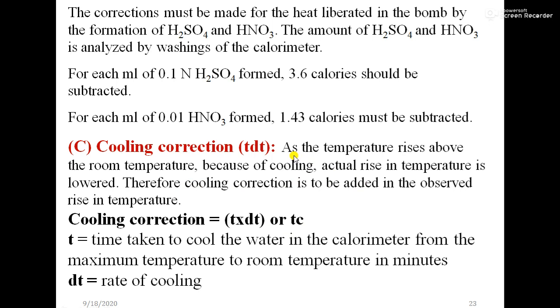As the temperature rises above the room temperature because of cooling, actual rise in temperature is lowered. Therefore cooling correction is to be added in the observed rise in temperature. Cooling correction is denoted by t×dt or tc, where t is time taken to cool the water in the calorimeter from maximum temperature to room temperature in minutes, and dt is rate of cooling.